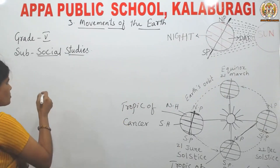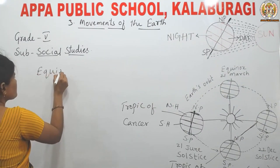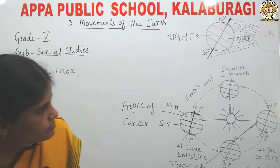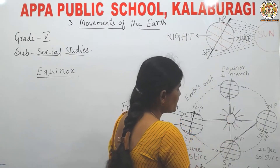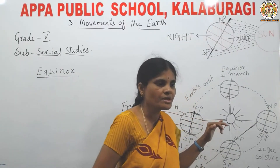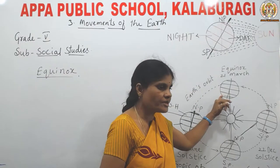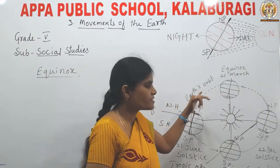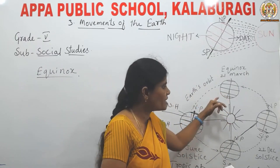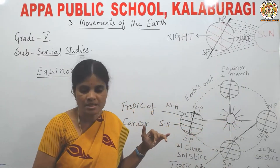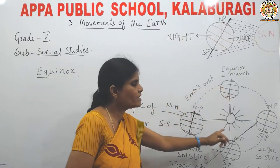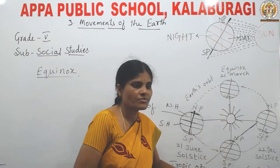Next is equinox. On 21st March and 23rd September, the sun rays fall directly on the equator. Two times a year, the equator receives direct sun rays. Neither pole is tilted towards the sun, so all places on the earth have equal days and equal nights. This position of the earth is called equinox.